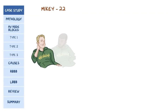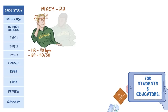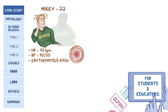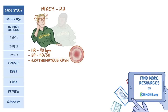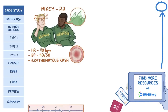Mikey is a 22-year-old male college student from Vermont who was sent to the emergency department after passing out. His vital signs show a heart rate of 40 beats per minute and a blood pressure of 90 over 50. On examination, there is an erythematous circular rash with central clearing. His friends mention that they recently went on a hiking trip.